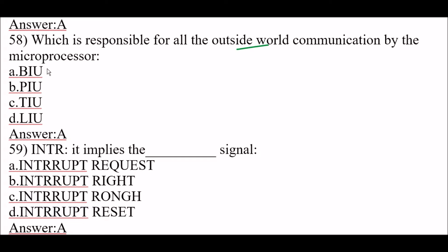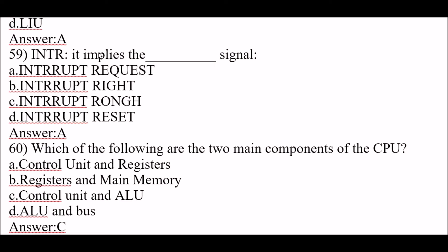Next question: which is responsible for all outside world communication by the microprocessor? The right answer is option A, BIU. The BIU is responsible for all outside world communication by the microprocessor. Next question: INTR implies the blank signal — the right answer is option A, interrupt request. INTR implies the interrupt request signal.